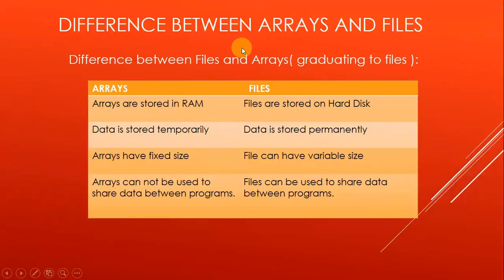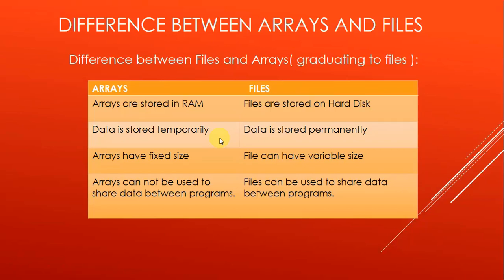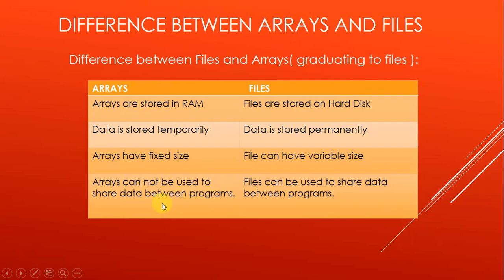Now let us understand the difference between arrays and files. Arrays are stored in RAM, however files are stored on a hard disk or any other secondary storage device. The data stored in RAM is temporary — it remains in memory as long as the program is running, and as soon as the program ends, the data stored in arrays gets wiped out. However, the data stored in files is permanent. Arrays have a fixed size and we cannot change the size of the array while the program is running, however files have variable size. Arrays cannot be used to share data between programs because an array in one program cannot be accessed by another program, however files can be used to share data between programs.